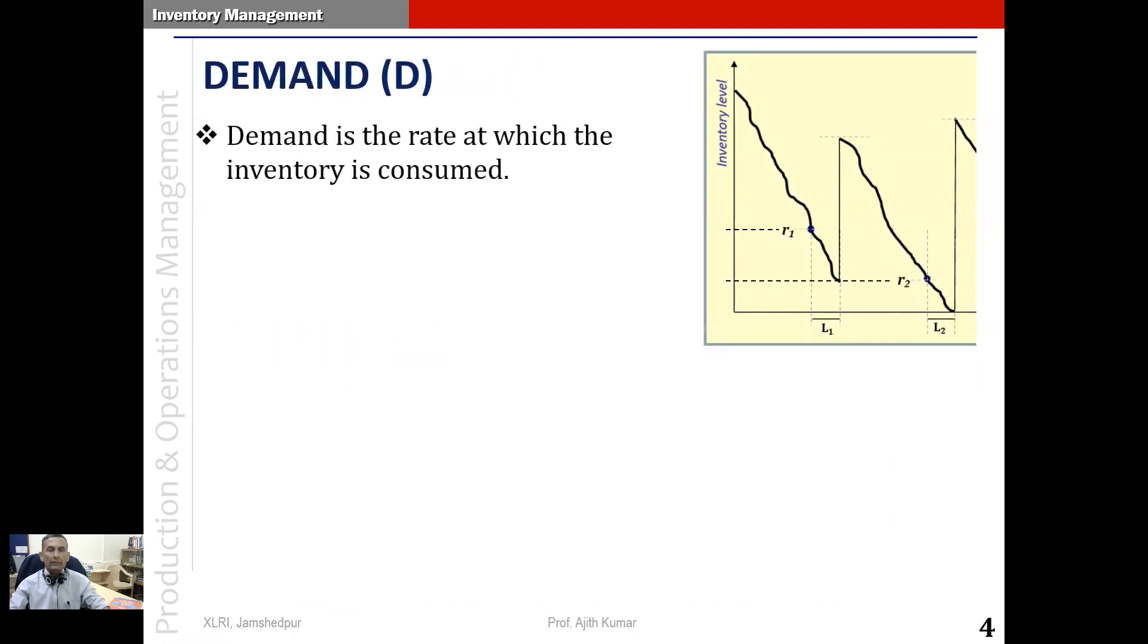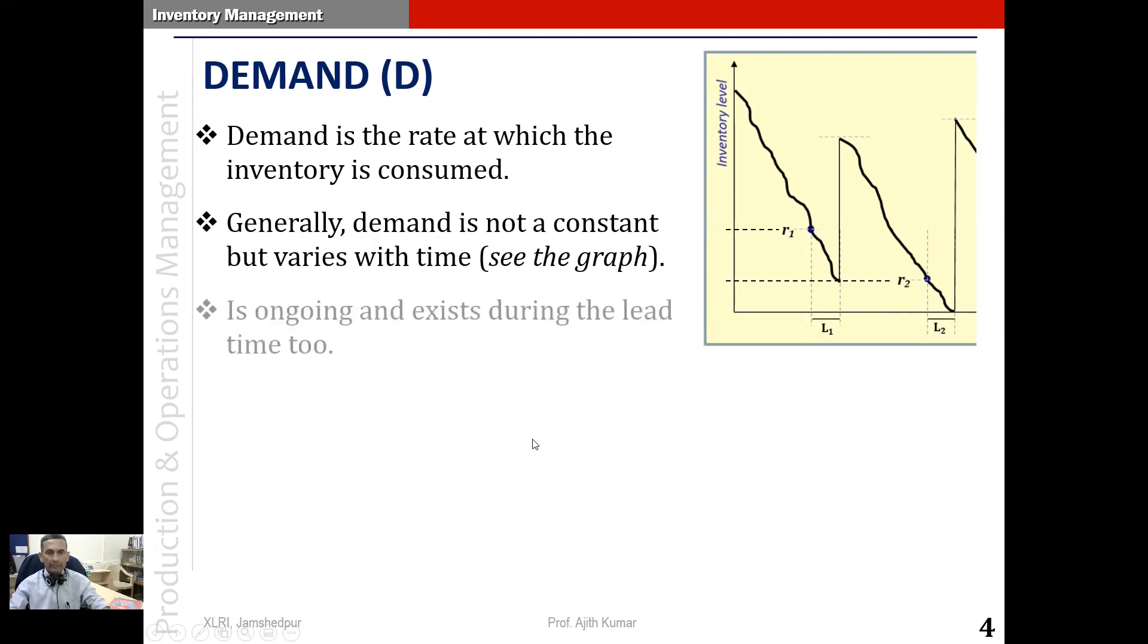The third term is demand. Demand is the rate at which inventories are consumed. Demand is units per time. Generally speaking, demand is not a constant as we just discussed, but can vary with time. Demand is ongoing and exists during the lead time too. During the lead time also consumption of inventory continues to happen as it happened before and after the lead time.